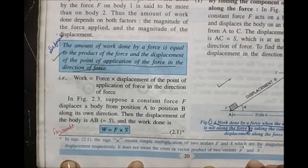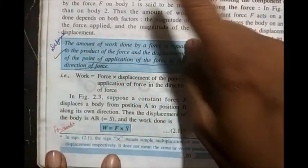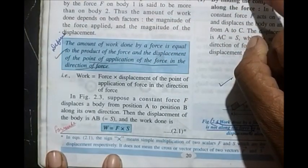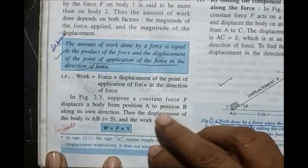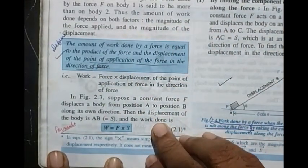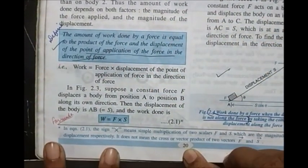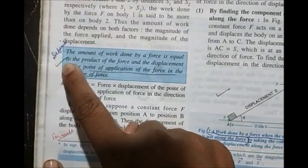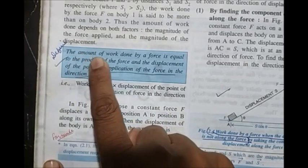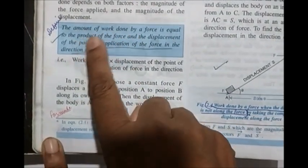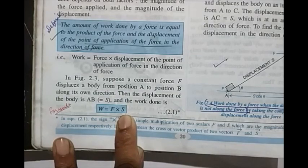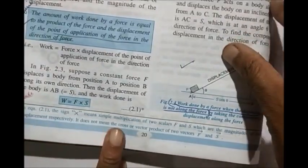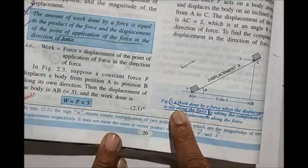We have completed the A part of this chapter - Force, Work, Power, Work Energy and Power. I'll mark what's important in this chapter. Take page 20. First, the definition: define work done, what is work done, and the formula W = F × s.